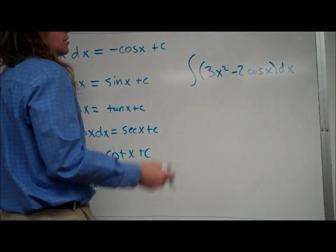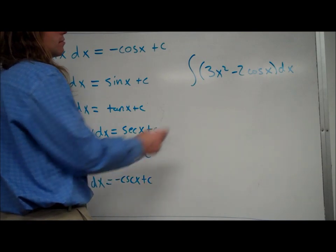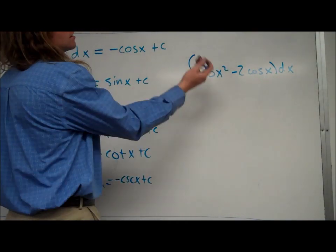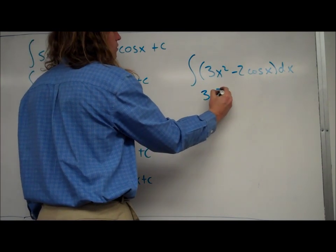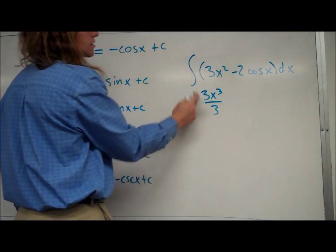The antiderivative of 3x squared, using the power rule, we add one to the exponent, divide by 3, so the 3's cancel. It ends up being 3x cubed over 3, but you can just cancel the 3's out.